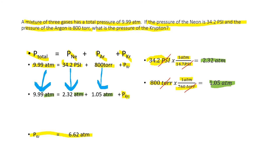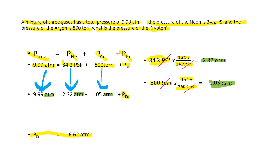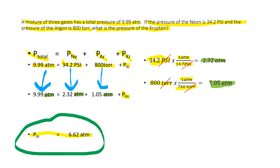You can go back and double-check this. We're always better adding numbers as opposed to subtracting. If the answer is correct, when you add up all the parts you should get the total. Our total was 9.99 atmospheres — 2.32 came from the neon, 1.05 came from the argon, and that means the rest had to come from the krypton. That makes the total pressure for the krypton 6.62 atmospheres.